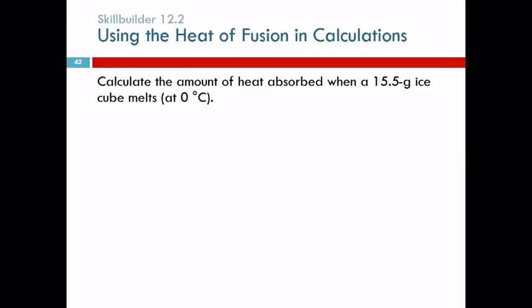So, let's calculate the amount of heat absorbed when 15.5 grams of ice melts at 0 degrees Celsius. We're going to treat this the way we did the other one. We're starting with an amount of ice. And it says amount of heat.